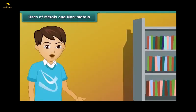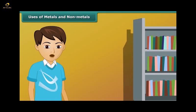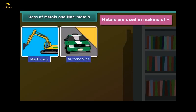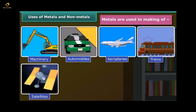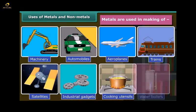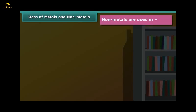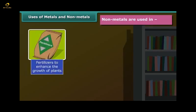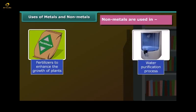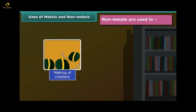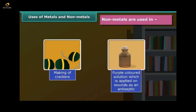Now let's move on to another important topic — the uses of metals and non-metals. As we know, metals are hard in nature, so they are used in making machinery, automobiles, aeroplanes, trains, satellites, industrial gadgets, cooking utensils, water boilers etc. Non-metals are not so hard, so they are used in fertilizers, water purification processes, life-supporting air, crackers, and as a purple-colored antiseptic solution on wounds.